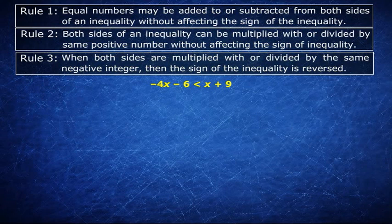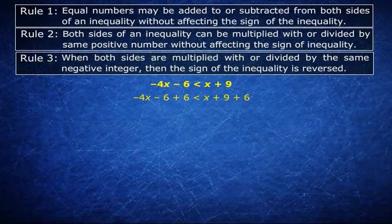Minus 4x minus 6 is less than x plus 9. Let's first add 6 to both the sides. And what do we get? Minus 4x minus 6 plus 6 is less than x plus 9 plus 6 or minus 4x is less than x plus 15.